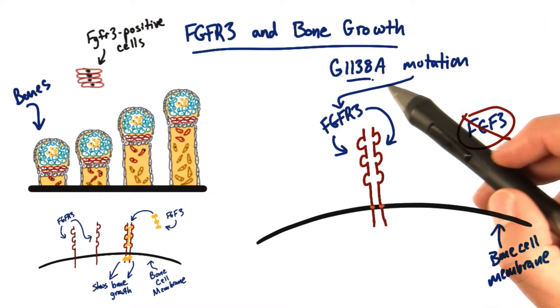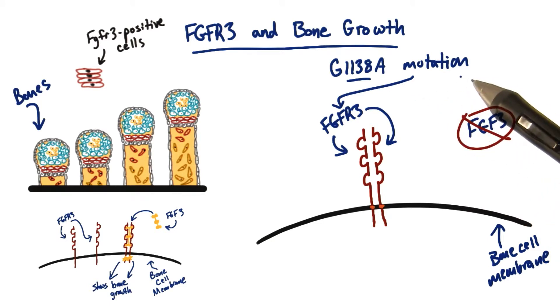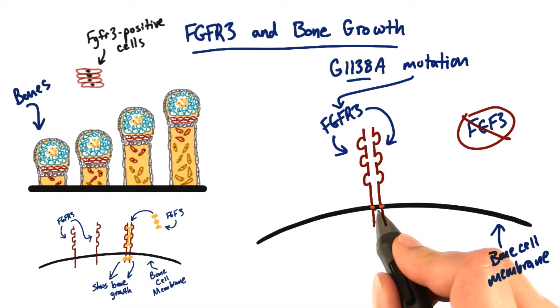Now what happens in the case of the G1138A mutation, the missense mutation, is that right here in this region where the protein spans across the cell membrane, that's where the amino acid change has happened.